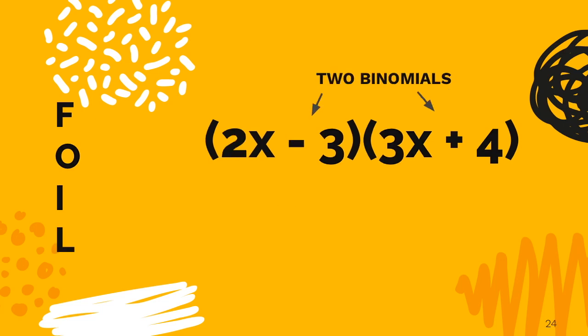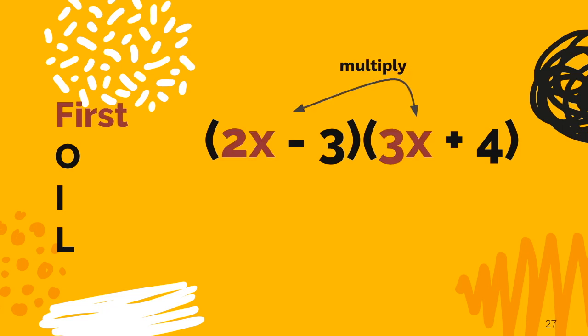Once again, we are given two binomials, and they are being multiplied. 2x minus 3 times the binomial 3x plus 4. Let's jump in and start with the first. We will need to multiply 2x times 3x. And of course, we get 6x squared.